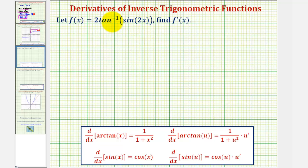Notice how the outer function is the inverse tangent function, and therefore we'll be using this derivative formula here that does include the chain rule, where u would be the inner function. So notice how in this case u would be equal to sine two x, which is also a composite function.